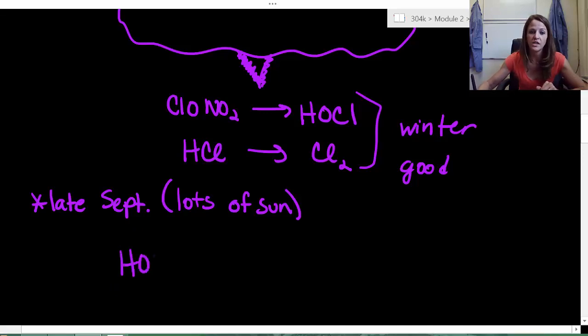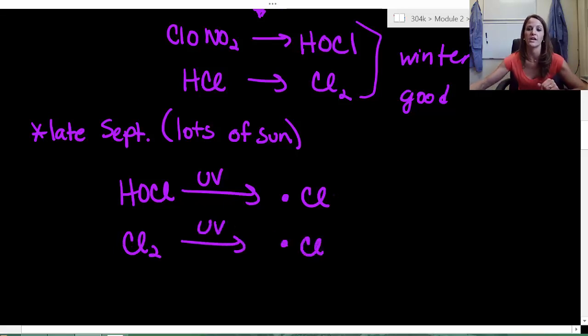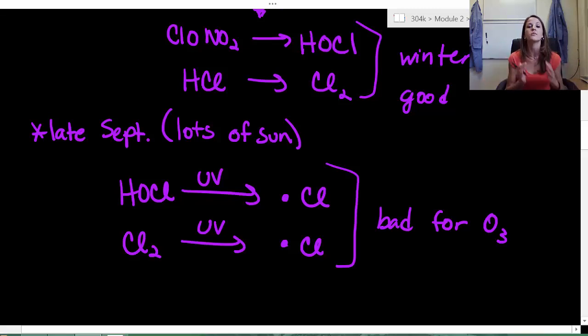Because when HOCl interacts with high energy UV radiation, it breaks apart to form a chlorine radical. Same thing with chlorine gas. It interacts with high energy UV radiation, breaks apart and forms the chlorine radical. These are bad for our ozone. We know this. When that chlorine radical comes in and interacts with ozone, it breaks apart ozone to form diatomic oxygen. Now, the really big problem is that chlorine radical is then regenerated. And so it's consumed and it's regenerated. It's a catalyst.